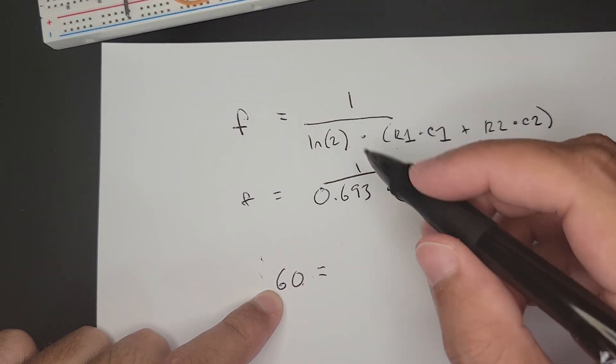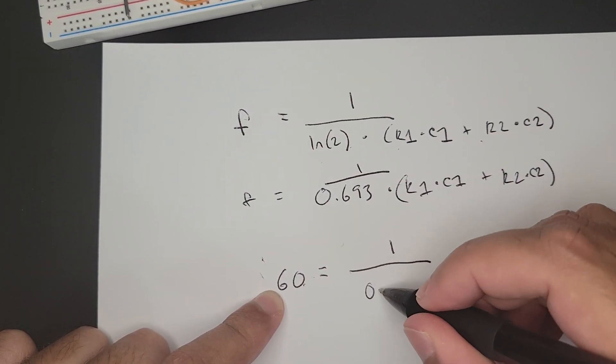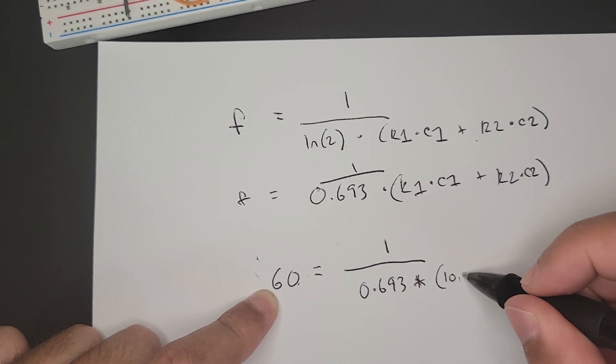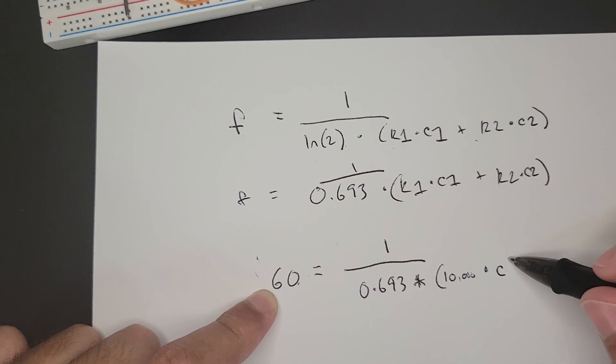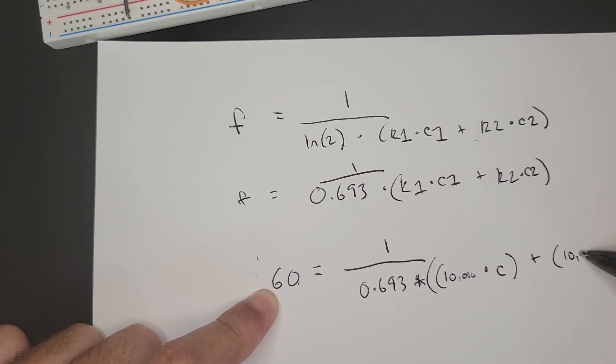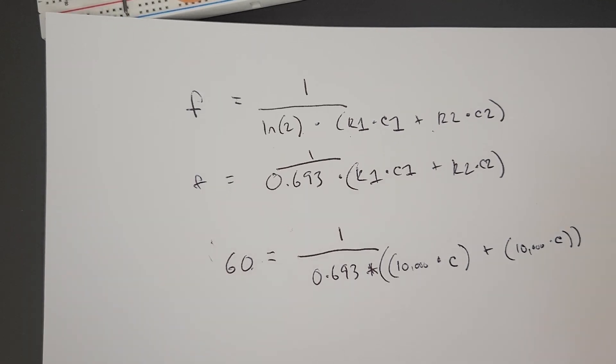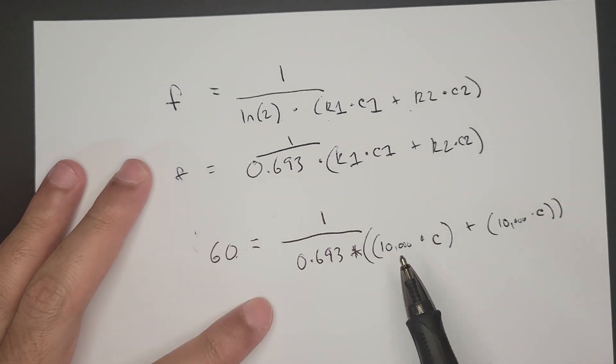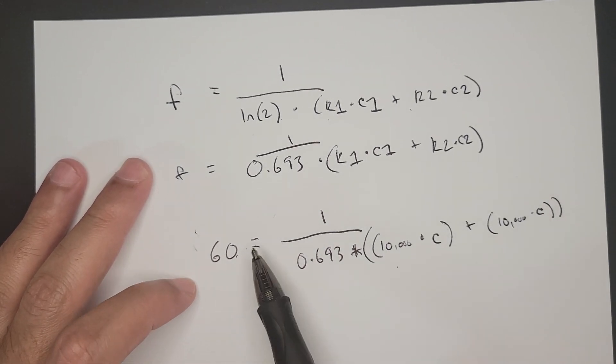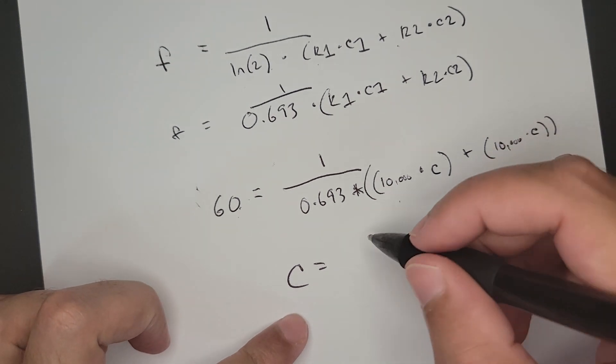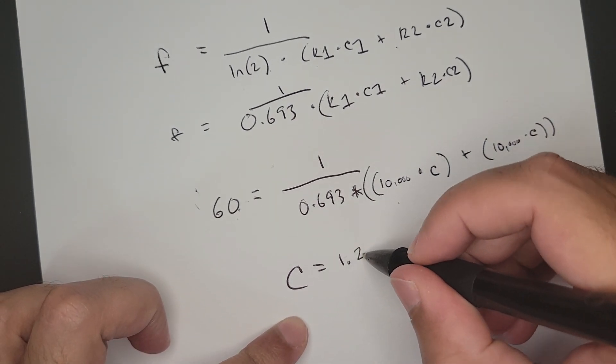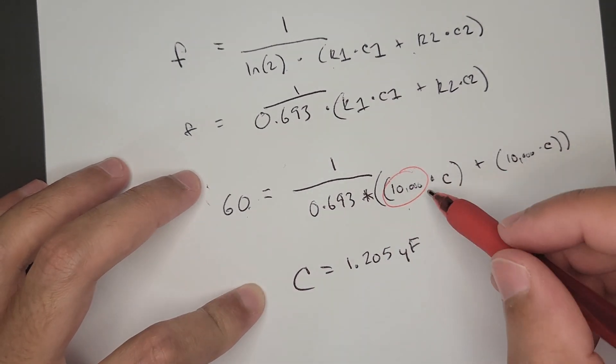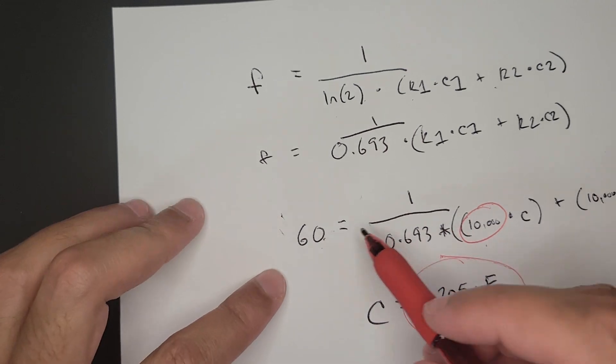I'm going to put in 60 because that's what I want my hertz to be, then 1 over 0.693, and then multiply by 10,000 ohms times C plus 10 times C. I think this should work. Let me run it through a calculator. The result is if we want to use 10,000 ohm resistors and reach 60 hertz, our capacitors need to be 1.205 microfarads. We assumed 10k and got this microfarad from it.